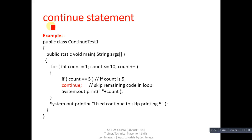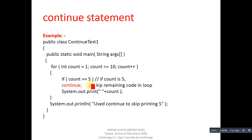Next is the continue statement, which is also available in C and C++. We can use continue only inside a loop. It will not terminate the execution of the loop, but will skip the current iteration. Here, if count equals 5, then continue will skip the remaining instructions — the println will not execute and control will move directly to the count increment statement. So continue has skipped the println for that iteration.